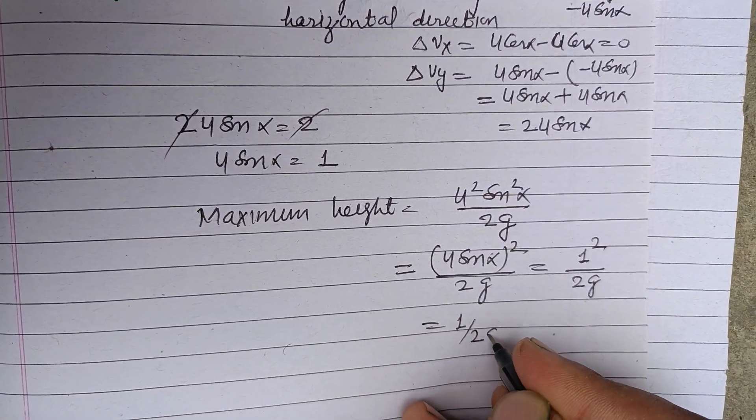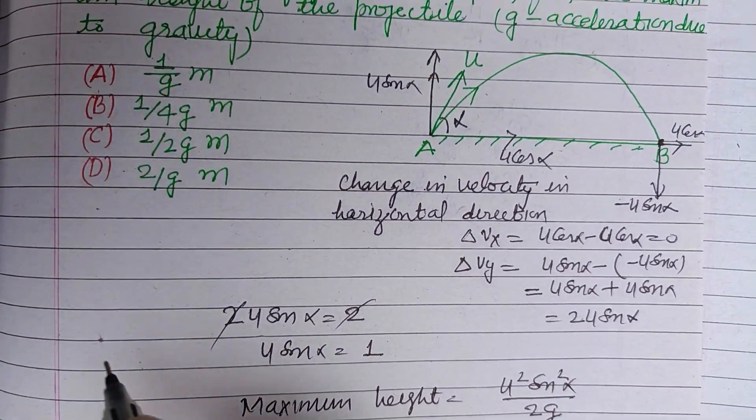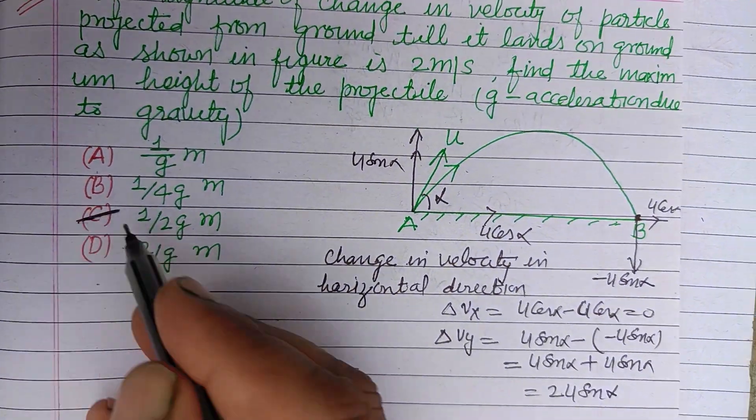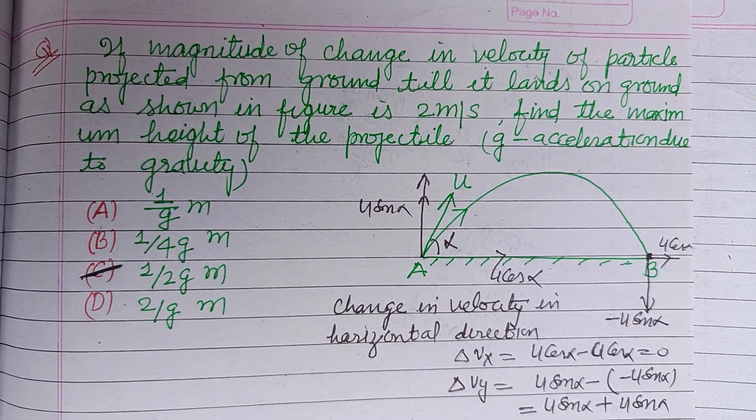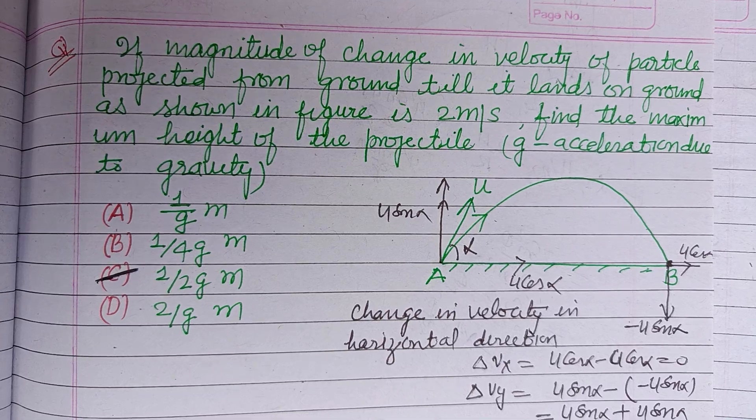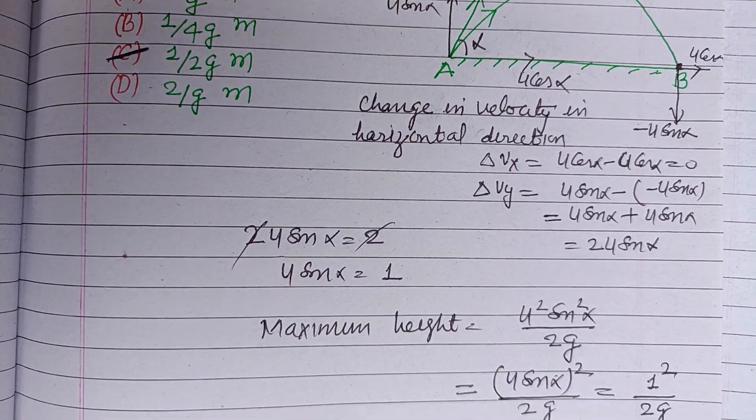So 1 upon 2g is the correct answer, which is found in option C. So option C is correct. I hope you got it, please like the video, subscribe the channel, thanks for watching.